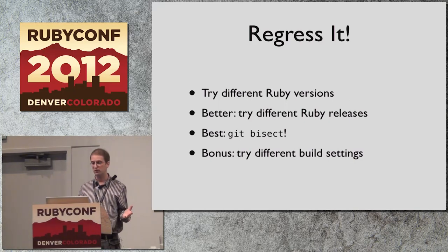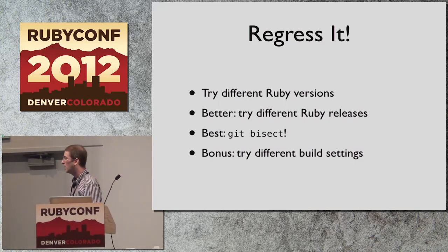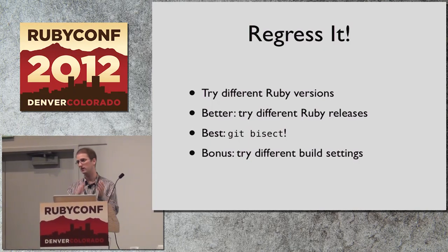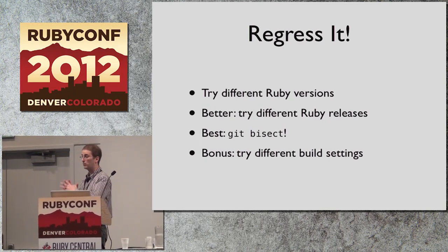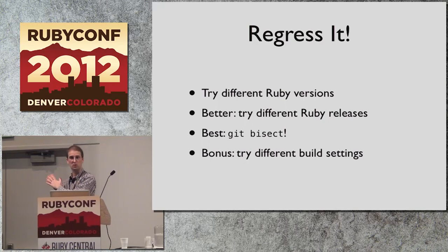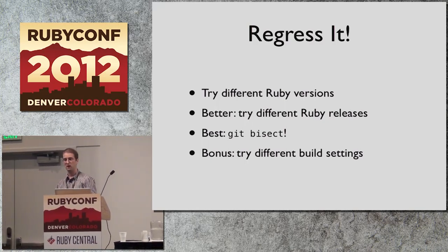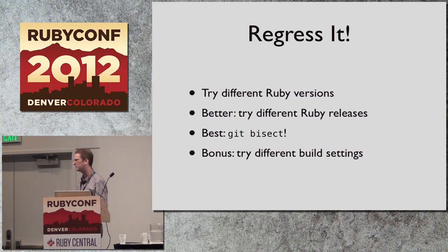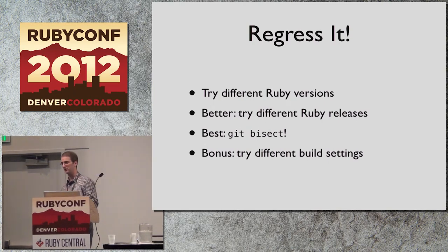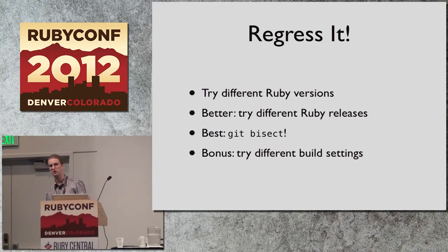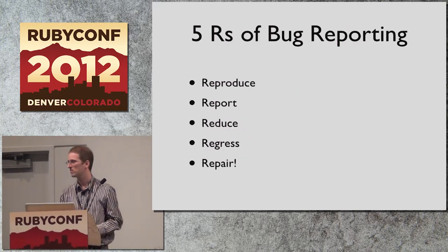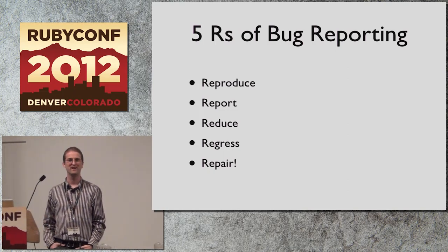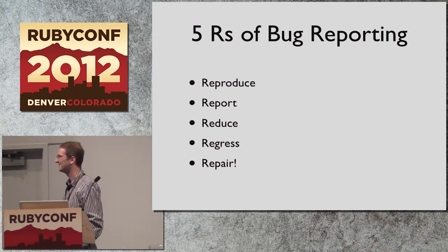Some of the tools you'll use to try and fix the bug depend on the bug being a small test case. And finally, if you're feeling really gung-ho, try to regress it. Ruby has multiple different versions and multiple different patch levels. You can try all of those and see: does it occur on 1.8.7? 1.9.3? 2.0? Git bisect is an amazing tool that you can set to run automatically and find the exact commit that caused your bug. And if you really are ambitious, you can try different build settings and different optimization levels.